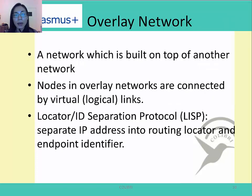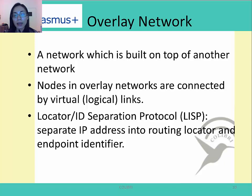Regarding overlay networks, it is a network which is built on top of another network. Nodes in overlay networks are connected by virtual links, and one can create multiple overlay networks in one physical network. Each overlay network can run its own protocol and has its own management strategies. One well-known proposal for overlay network is LISP, the locator ID separation protocol proposed by Cisco. This separates the IP address into a routing locator and an endpoint identifier. Currently, the IP address can do routing and also serve as an identifier for the host, but in LISP we have two IP addresses — one used for routing and the other for endpoint identification.